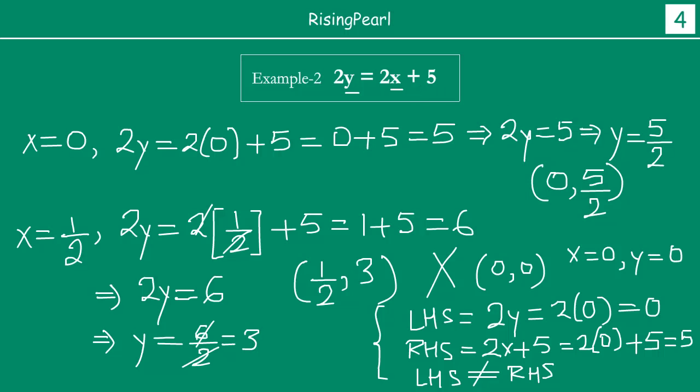So, friends, we have seen that you can find infinitely many solutions. At the same time, if an ordered pair is given to you and you are asked if it is a solution, you plug the values into the equation and check if the left hand side is equal to the right hand side. That tells you whether that ordered pair is a solution or not.